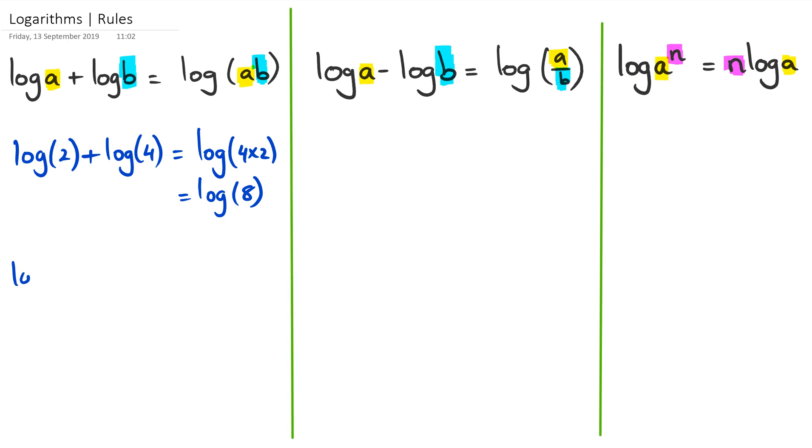Now the next example, if we have something like log of 10 plus log of 3, then this is just going to be log of 10 times 3, which is just 30.